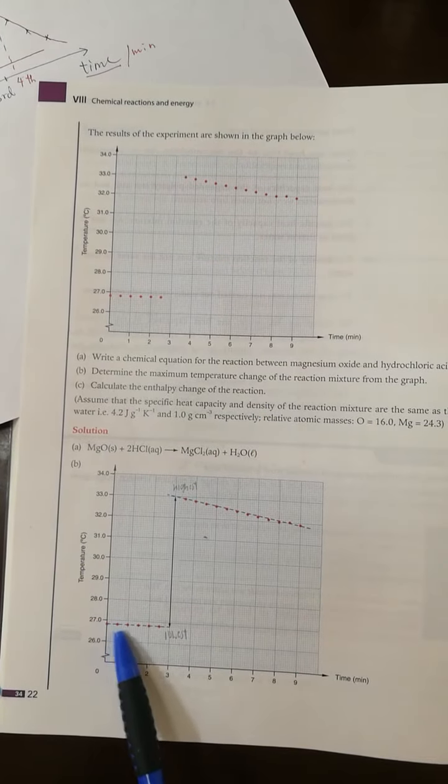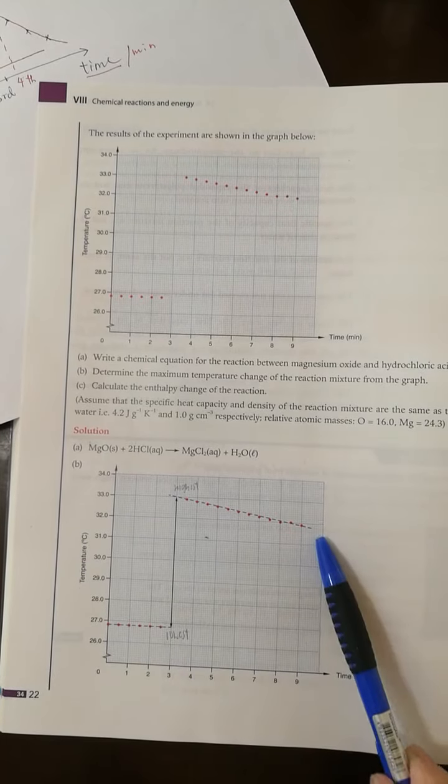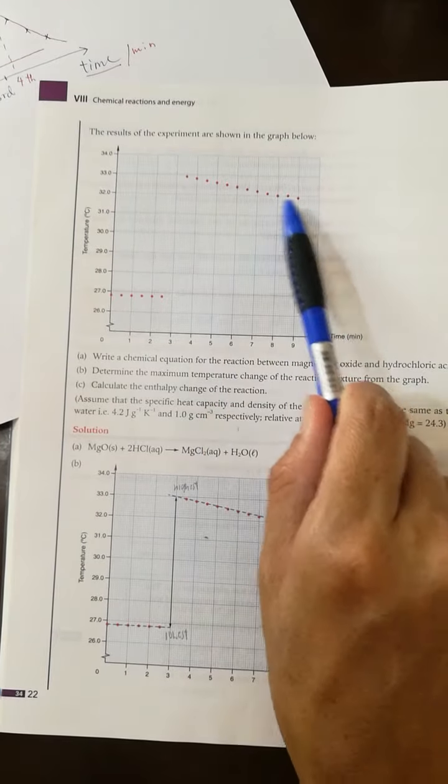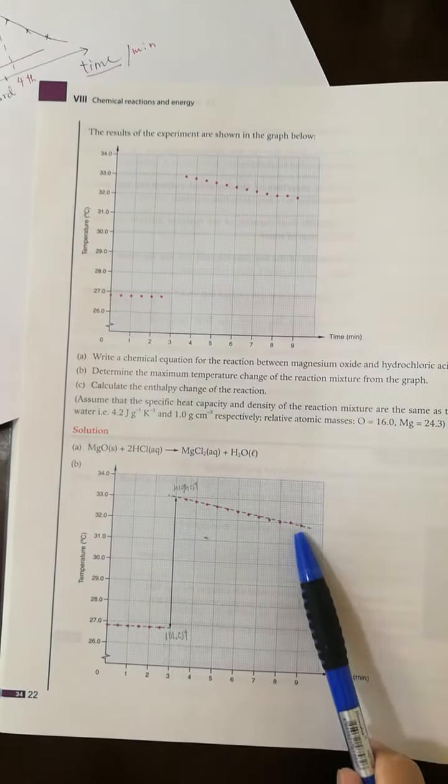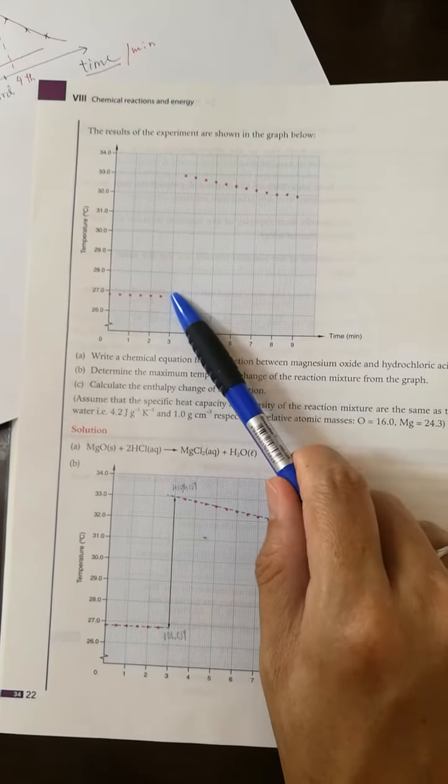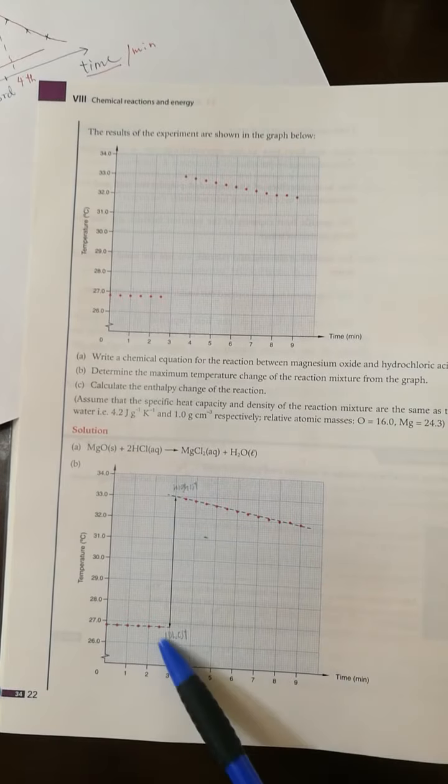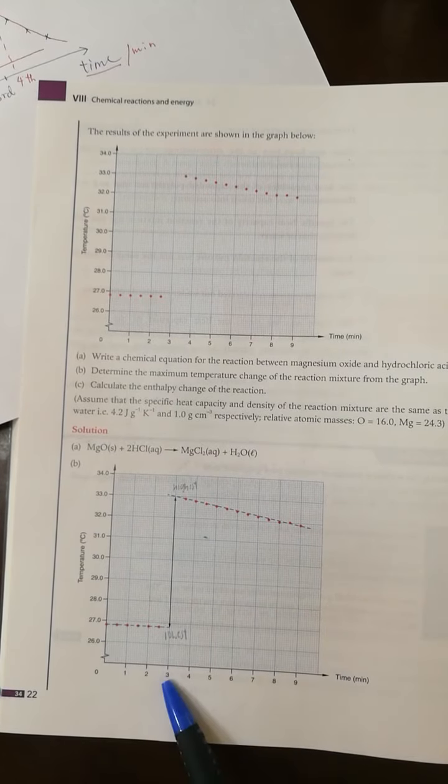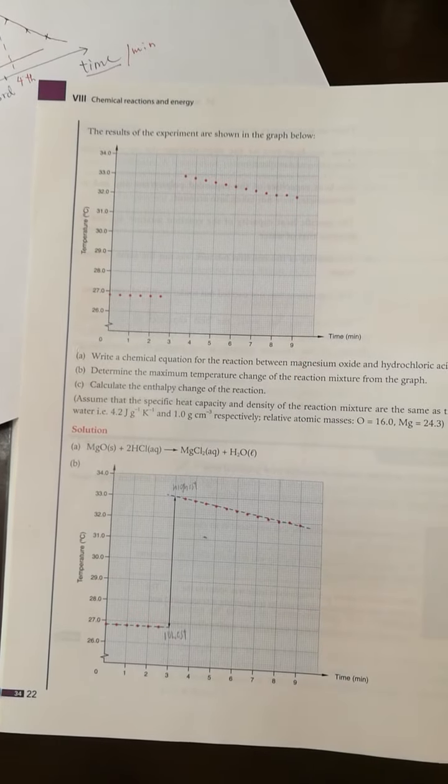What we need to do is join the first few points together and also join the points after the third minute together. Extend the two straight lines and find the greatest temperature rise at the time when you add the magnesium oxide to the HCl - that is when the reaction happens.